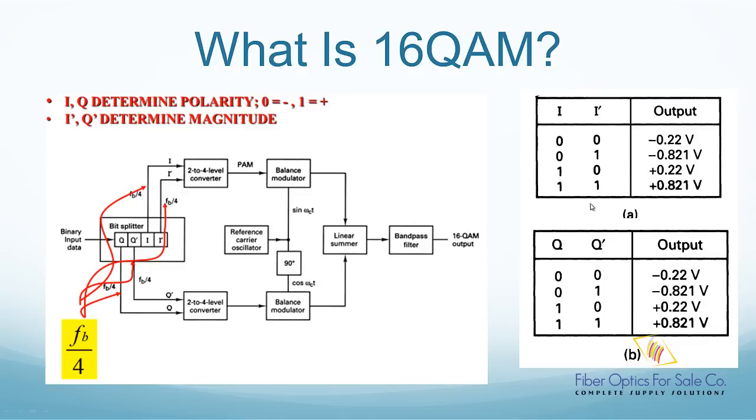So each pair of bits has four different outputs as shown in this table. Then they are added up in a linear summer. 4 times 4 is 16. So there is a total of 16 different combinations at the total output. That is why this is called 16 QAM.